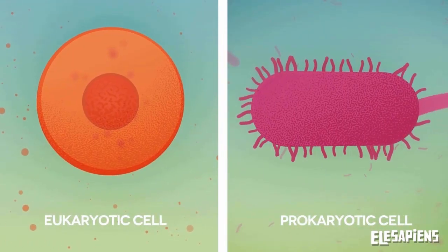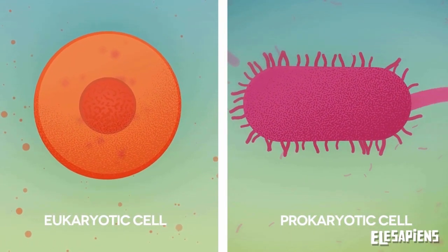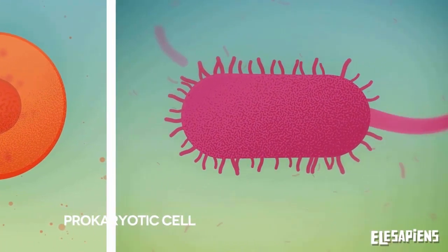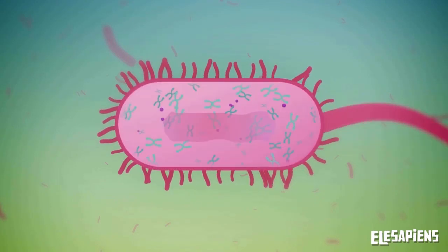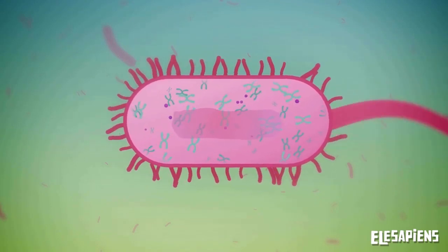Cells in microorganisms are simpler and lack a nucleus. Their genetic material is dispersed in the cytoplasm.